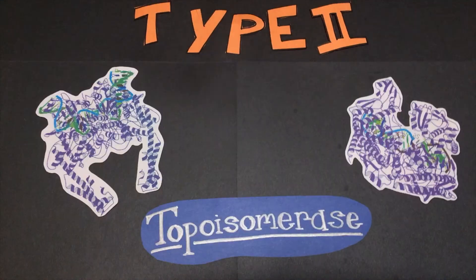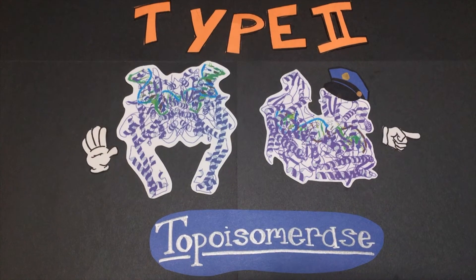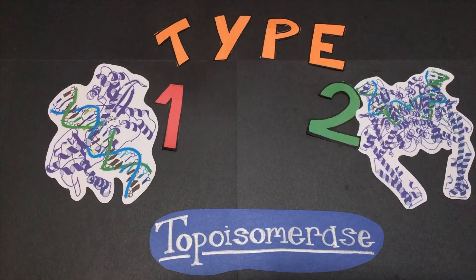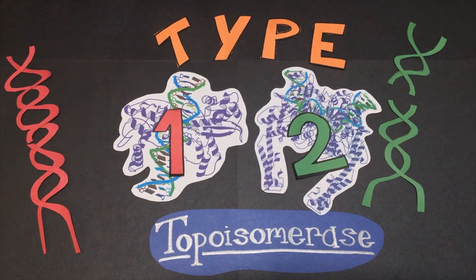Type 2 topoisomerases are essential enzymes that help regulate the state of DNA supercoiling and ensure proper chromosome condensation and segregation in the cell. Type 2 topoisomerases are differentiated from type 1 topoisomerases because they catalyze double-stranded breaks in DNA, hence type 2.